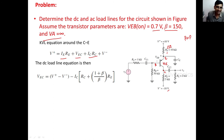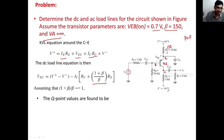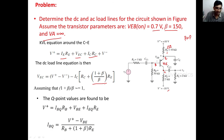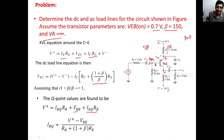Applying KVL at the output side: V+ = ie·Re + Vec + ic·Rc + V−. The DC load line equation becomes Vce = (V+ − V−) − Ic·[Rc + (1 + β)/β·Re]. With (1 + β)/β ≈ 1, this simplifies to Vce = (V+ − V−) − Ic·(Rc + Re). At the input side, KVL gives: V+ = ibq·Rb + Vbe + ieq·Re.